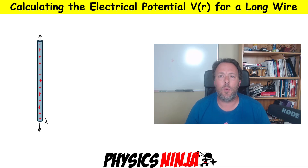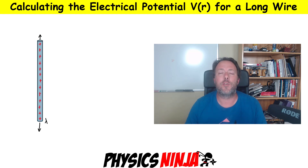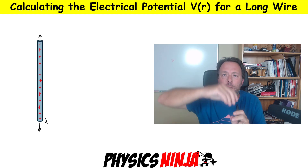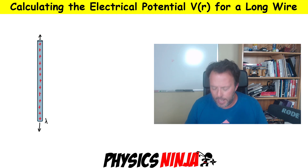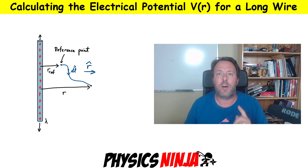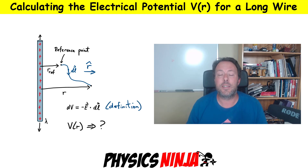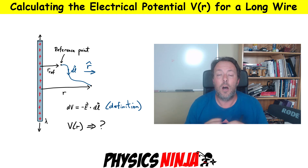Hi everybody, PhysicsNinja here. Today what we're going to do is calculate the electrical potential V of R for a really long wire. What we're first going to do to set this problem up is consider a long wire as shown here next to me. It's going to have a uniform linear charge density, and I'm going to show you how to calculate V of R as a function of distance away from that wire.